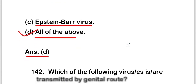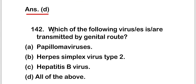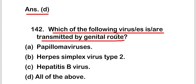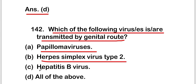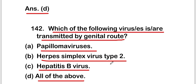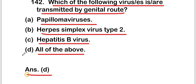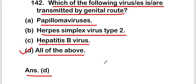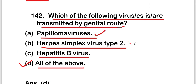The next question is: which of the following viruses is or are transmitted by the genital route? The options are Papillomavirus, Herpes Simplex Virus type 2, Hepatitis B virus, or all of the above. The right answer is option D, all of the above. All three viruses are transmitted by the genital route.